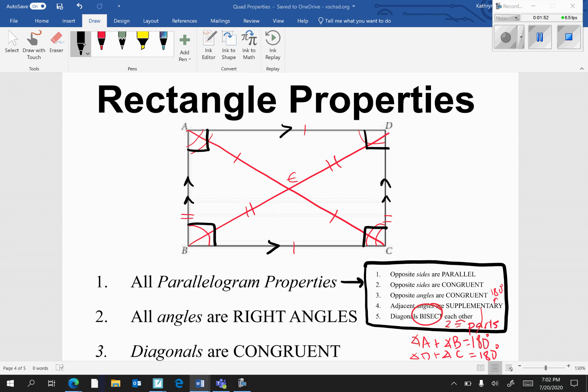And number three, diagonals are congruent. So diagonal AC is congruent to diagonal BD. And that's what really sets a rectangle apart from other quadrilaterals.